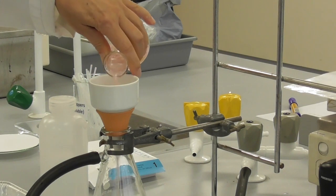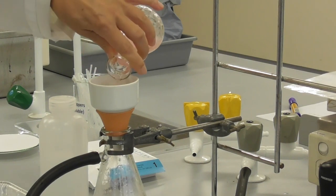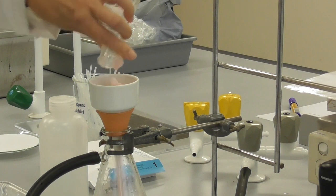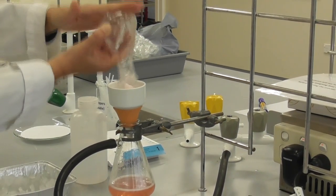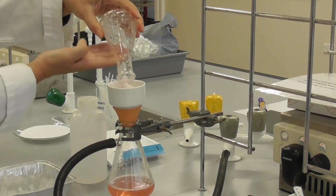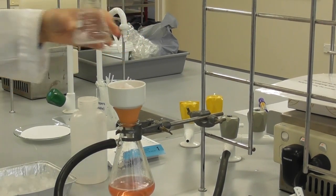We swirl the flask to create a slurry and pour this into the buchner funnel. We try to transfer all the crystals into the funnel by shaking the flask and possibly scraping the last little bit out with the spatula.